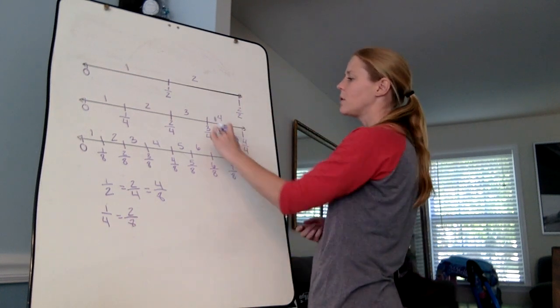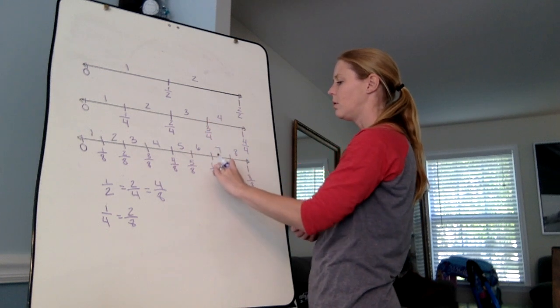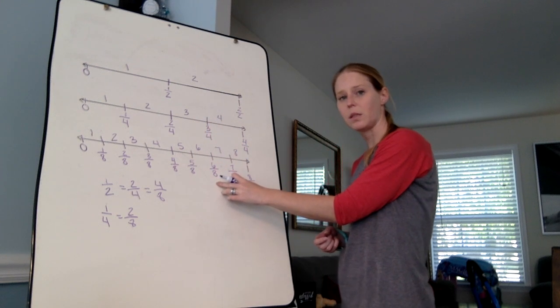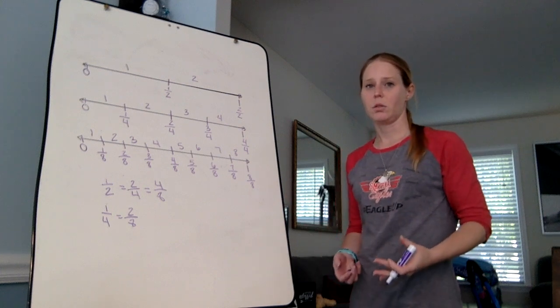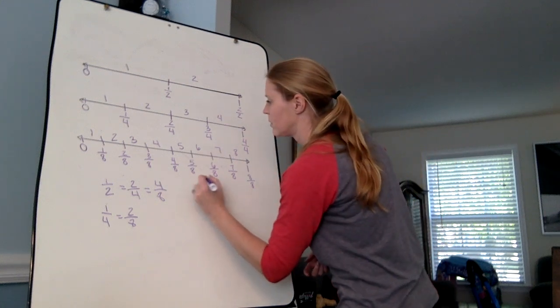They take up that same amount of space. Same thing over here with three fourths. Three fourths runs into six eighths. They take up the same amount of space. They're equivalent fractions. I'll write that over here.